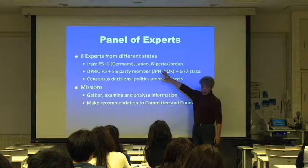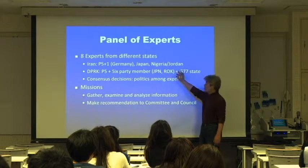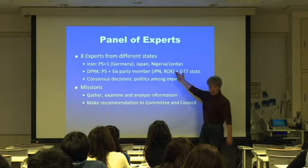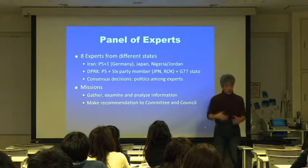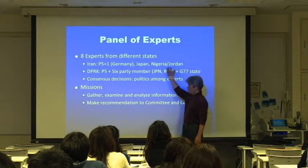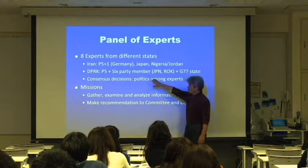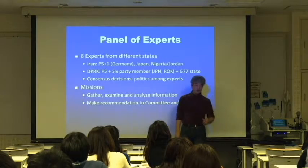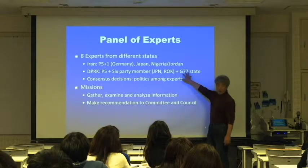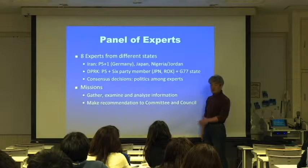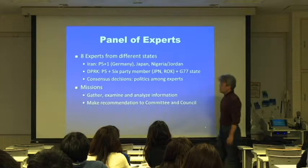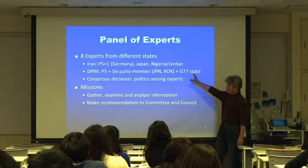The other seat started with Nigeria from 2010, and when that expert left, an expert recommended by Jordan took the position. On the DPRK panel, P5 plus the six-party talks members including Japan and South Korea — Republic of Korea — are fixed, making seven, plus one G77 seat, which are basically developing countries. In this case it was South Africa. So the DPRK panel has this composition, which is basically politically decided.